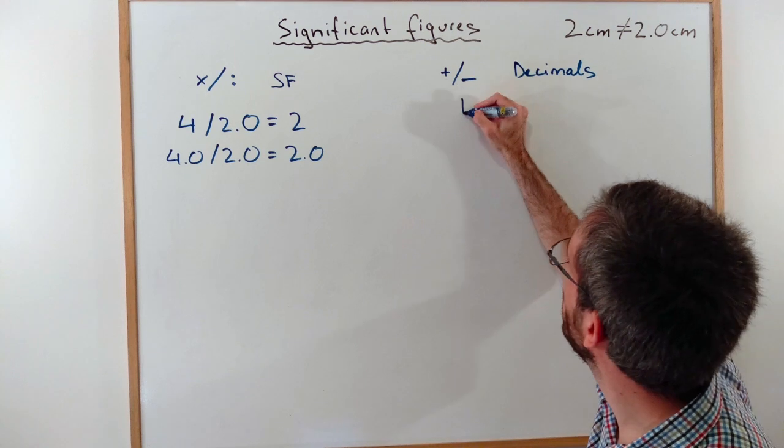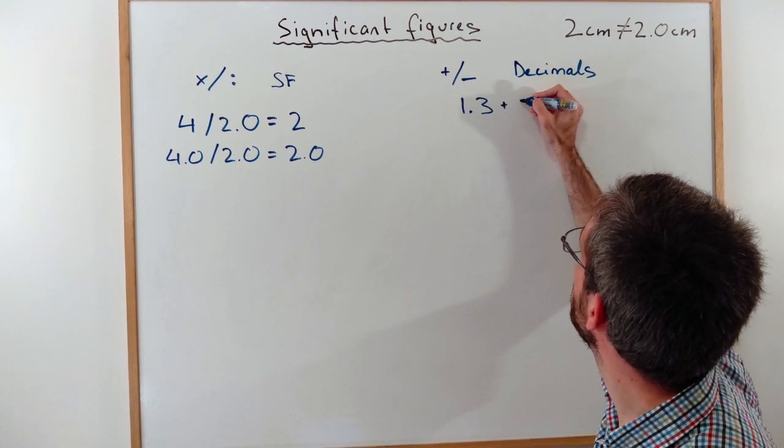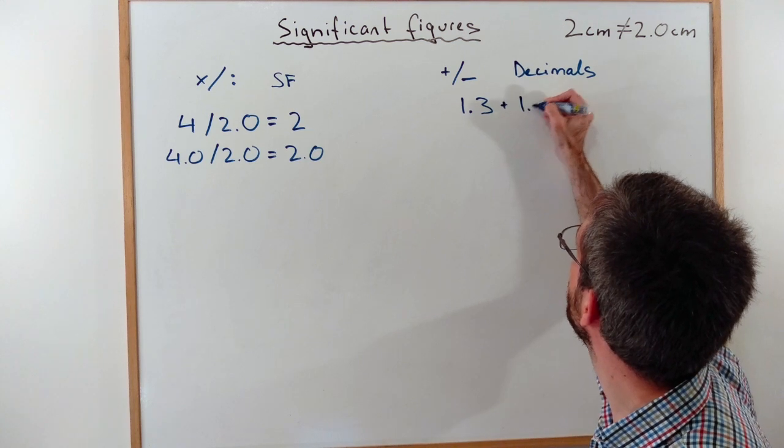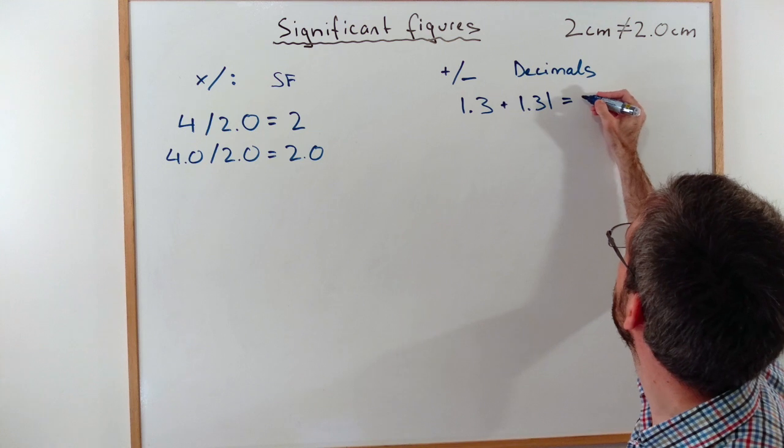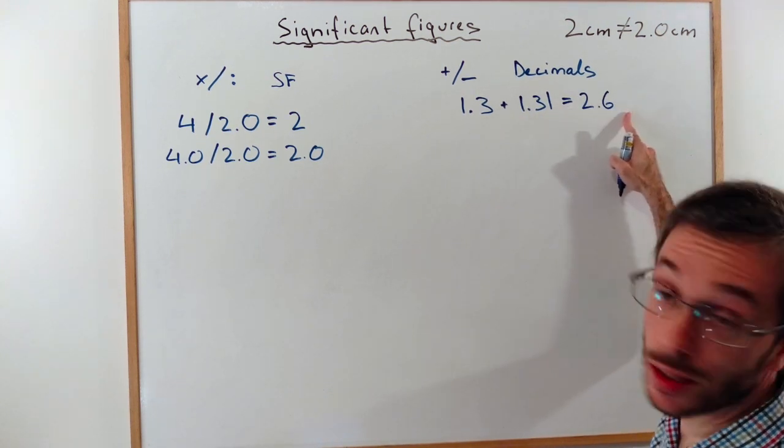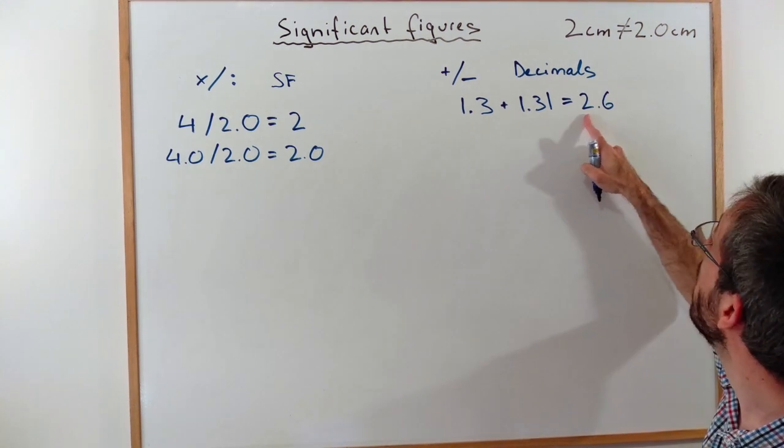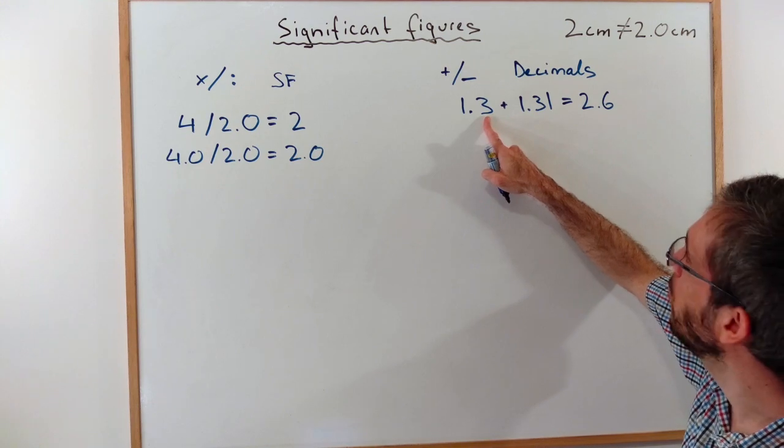For example, 1.3 plus 1.31 would give me 2.6. I would not write the 1 at the end because I round to 1 decimal as this one had only 1 decimal.